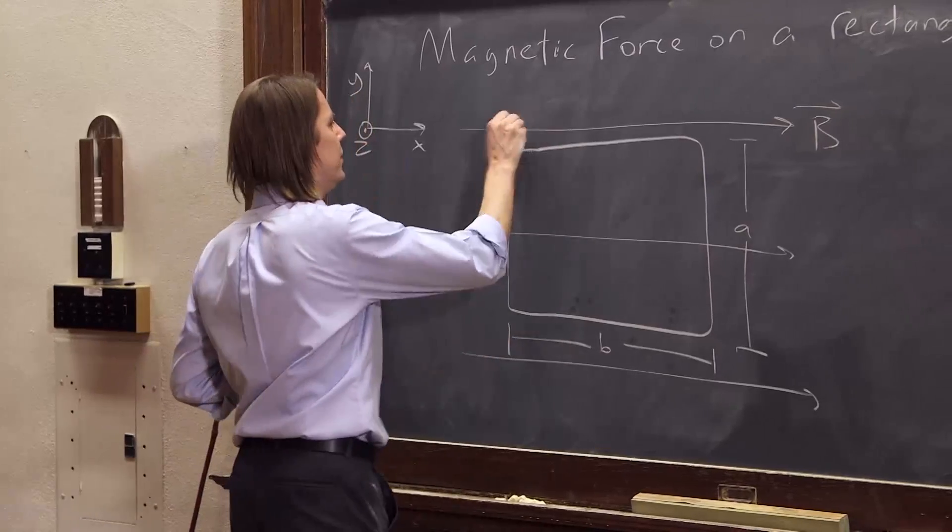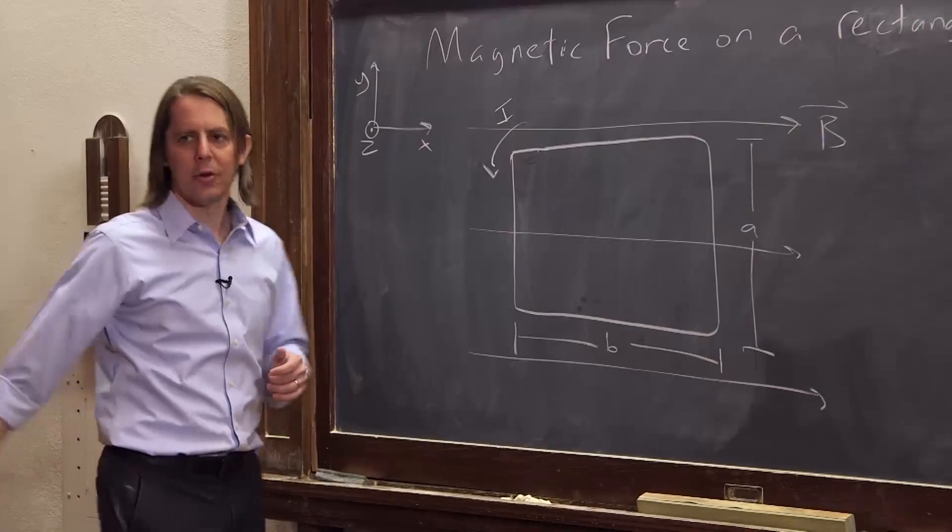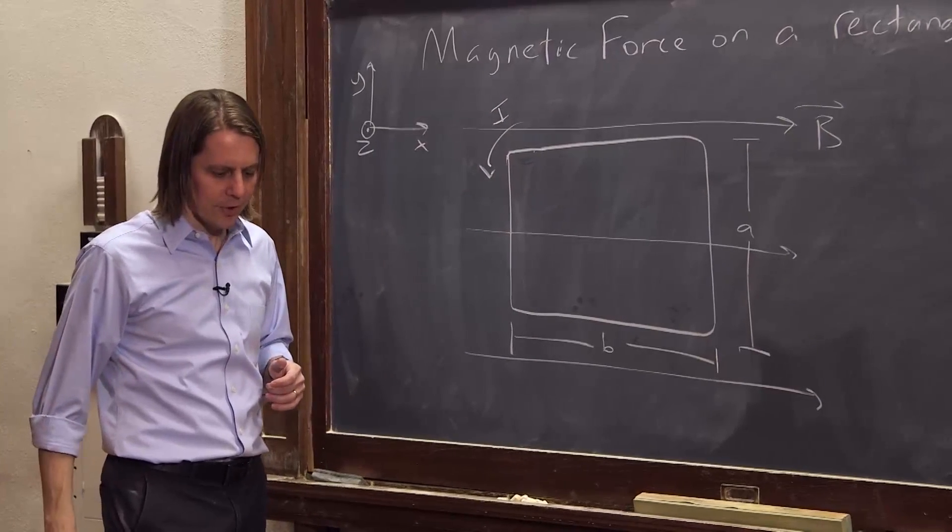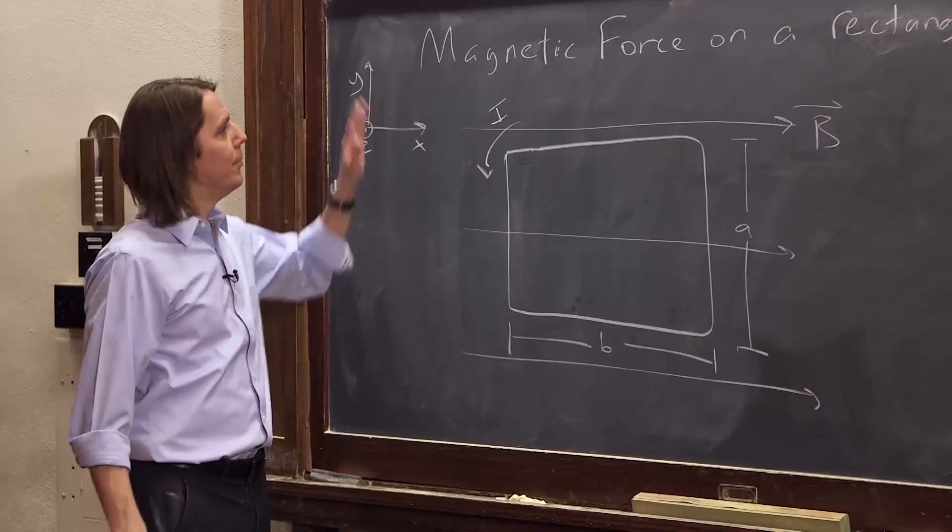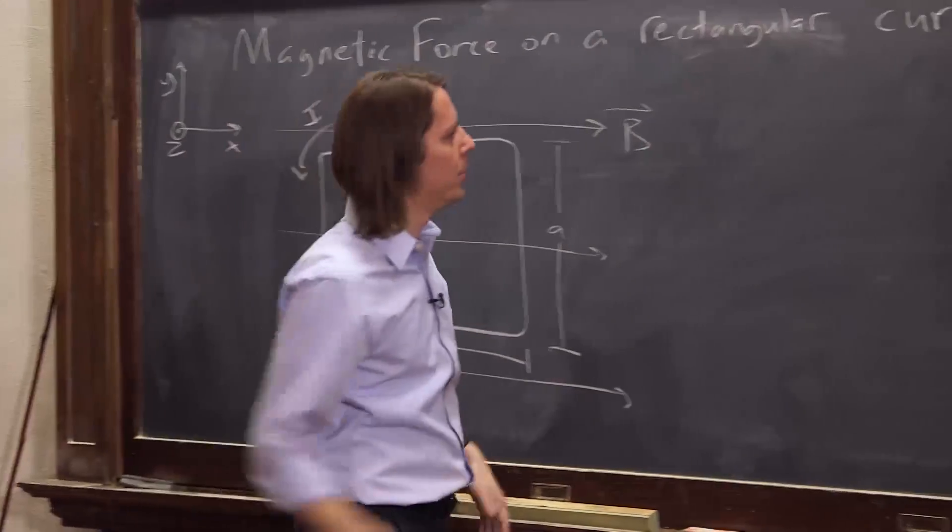And current is going to go around this way. Current is flowing counterclockwise in this rectangle. So here we go. Magnetic force on a current loop. In this case, a nice geometrical current loop.